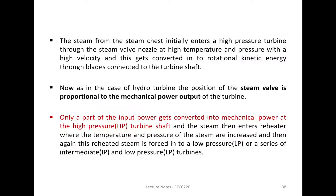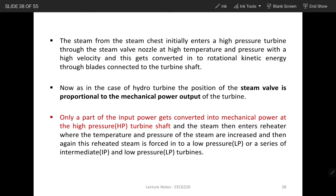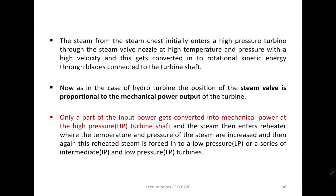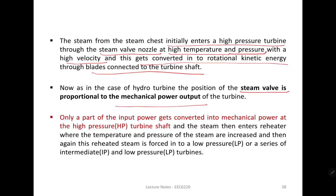The steam from the steam chest initially enters the high pressure turbine through the steam valve nozzle at high temperature and pressure with high velocity, and this gets converted to rotational kinetic energy through blades connected to the steam turbine. Unlike a hydro turbine where the valve position is directly proportional to mechanical power, here only a part of the input power gets converted into mechanical power at the high pressure turbine shaft.